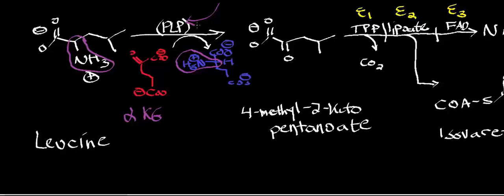One important thing to realize is that the delta-G of transaminase reactions is around zero. So these reactions are reversible, but depending on which molecules you load the system up with — whether it's leucine or 4-methyl-2-ketopentanoate — you can force the reaction to go either direction, because the delta-G is around zero and it's really just subject to Le Chatelier's principle.